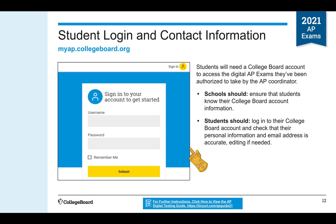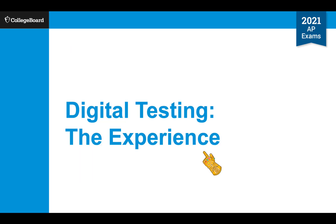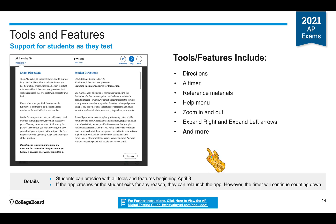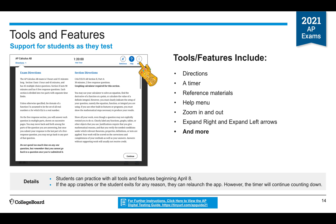Now we're going to move on to the digital testing experience. Here are some of the tools and features you'll see on your digital test: directions, a timer, reference materials, a help menu, zooming in and out, and expand right and expand left arrows under the More menu. You can practice with all the tools beginning April 8th. If the app crashes or you exit for any reason, you can relaunch the app; however, the timer will still be counting down.